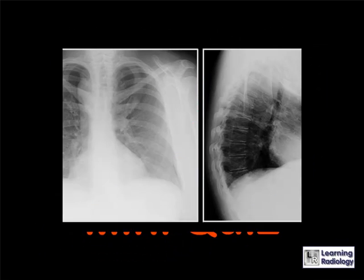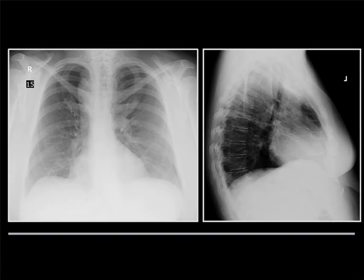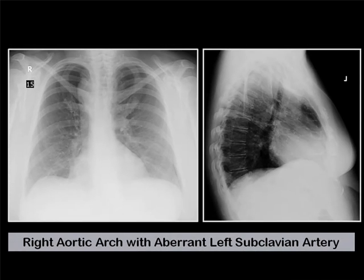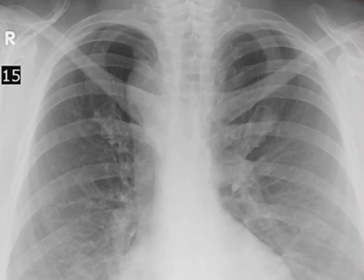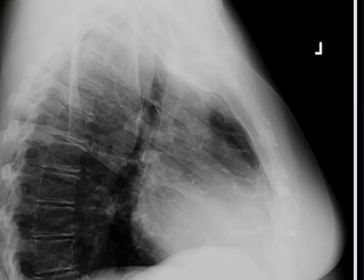Here is your mini-quiz. This is an adult — you have a frontal and lateral chest x-ray. Pause your player and decide what you think. If you said this is a right aortic arch with an aberrant left subclavian artery, you'd be correct. This image shows the right aortic arch displacing the air-filled trachea to the left, and the lateral image demonstrates forward displacement of the air-filled trachea, indicating that there is an aberrant vessel behind.